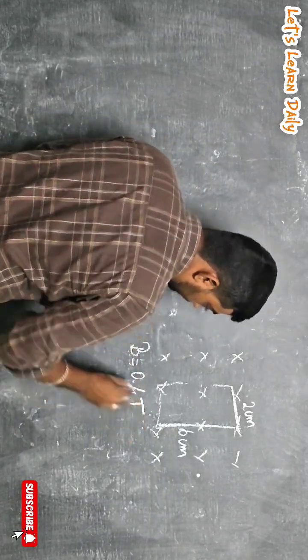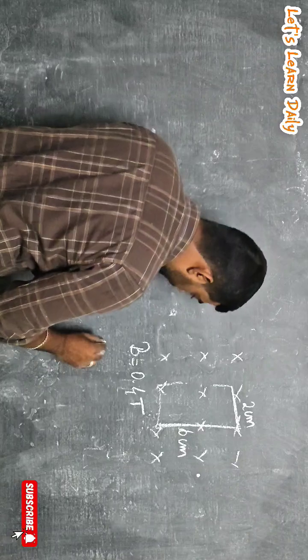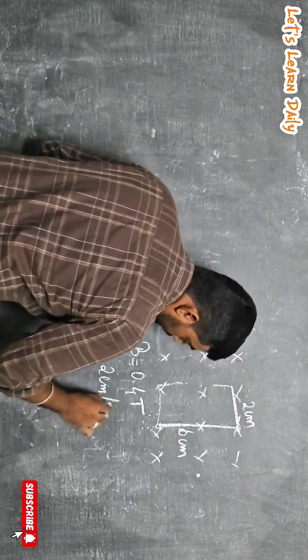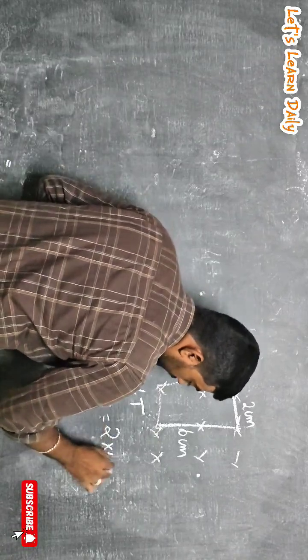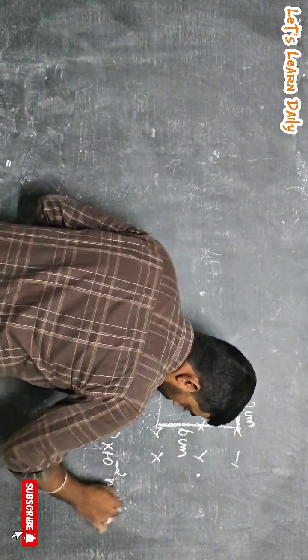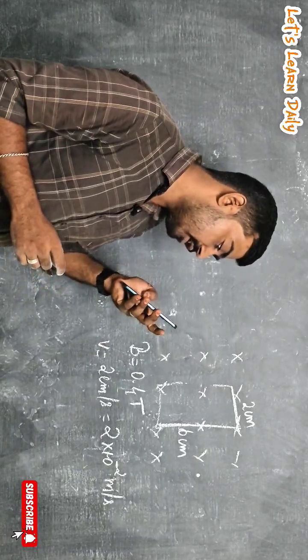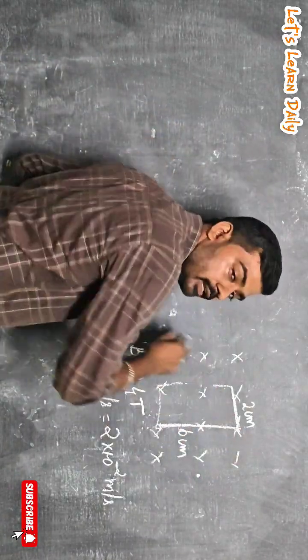The magnetic field value is 0.4 tesla. Then velocity of the loop is 2 centimeter per second, which is 2 into 10 power minus 2 meter per second. What we have to do is find the voltage developed across the longer side. So the longer side is this, so L equal to 6 centimeter.